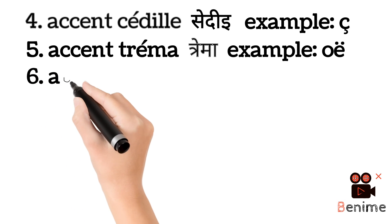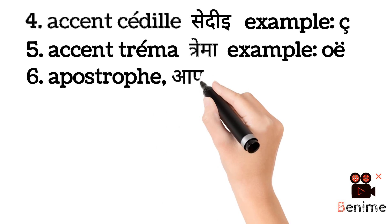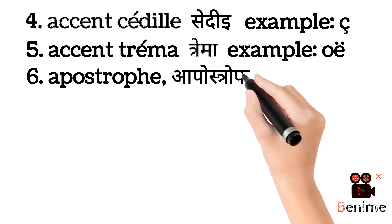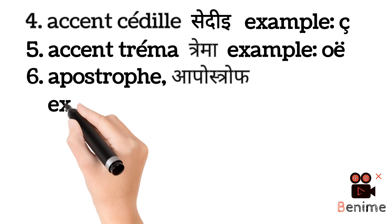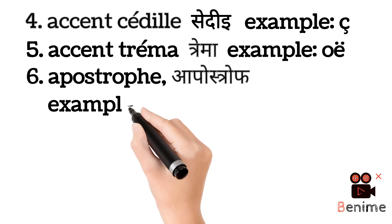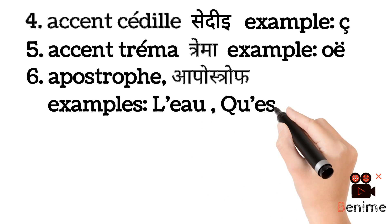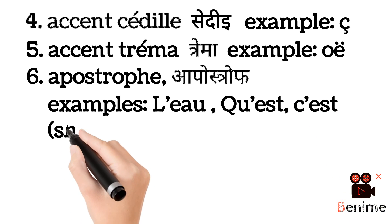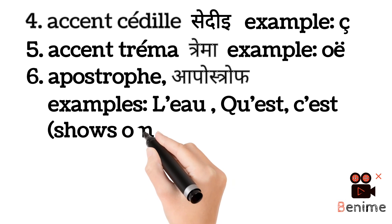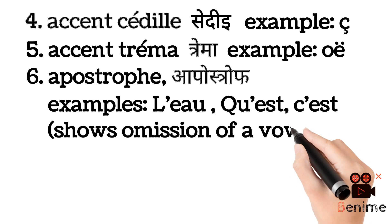Apostrophe. Examples: l'o, k'a, k'si. The apostrophe shows omission of a vowel.